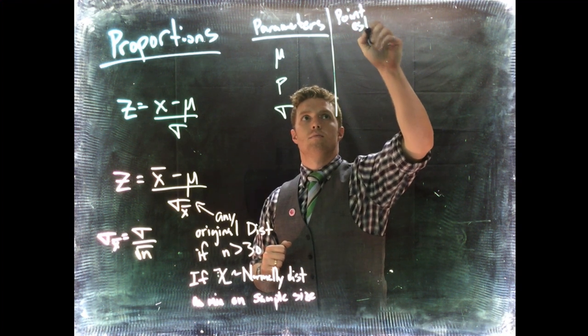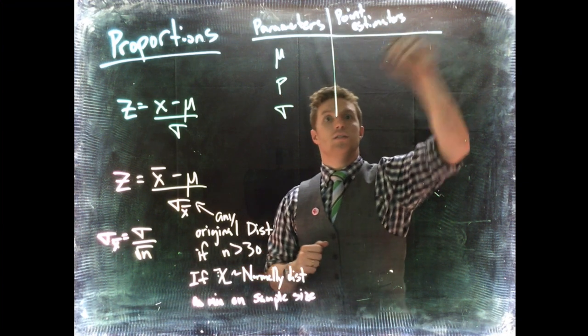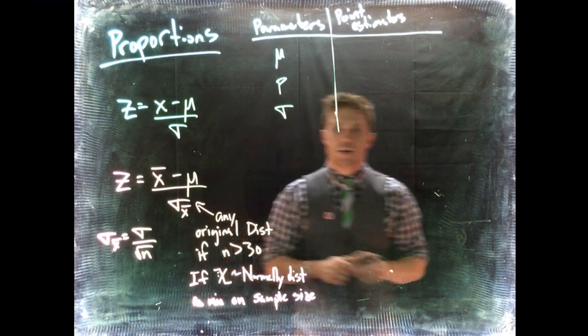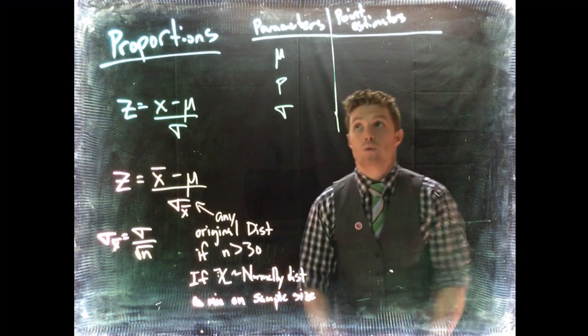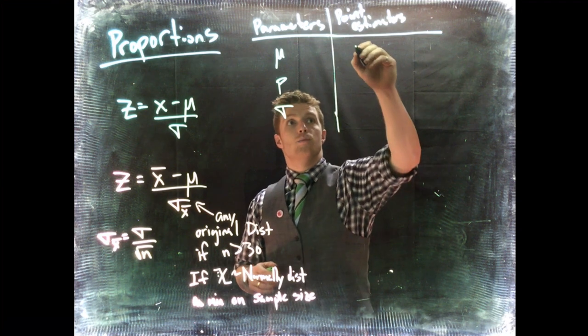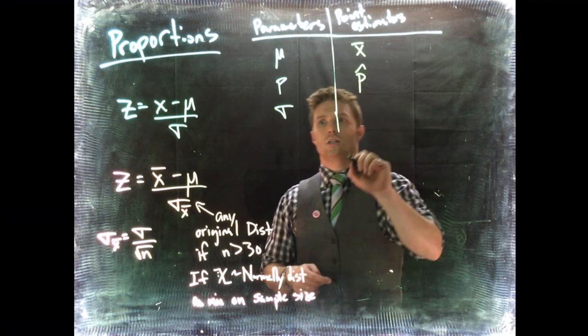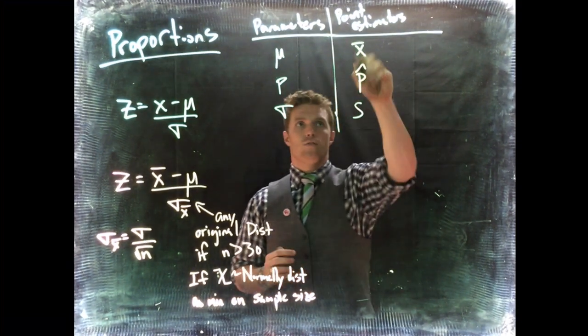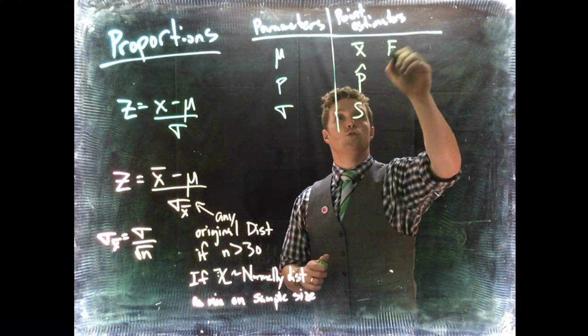Then we have estimators—unbiased point estimators. If they're unbiased, they're centered about the population value. Our estimator for mu is X-bar the sample mean, for P is P-hat the sample proportion, and for sigma is s.